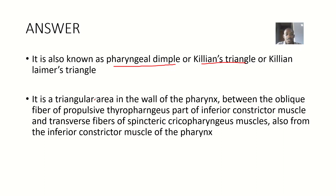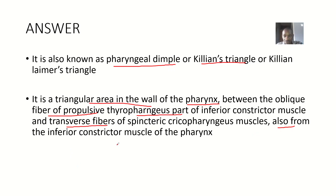It is a triangular area in the wall of the pharynx, between the oblique fibers of the thyropharyngeus part of the inferior constrictor muscle and the transverse fibers of the sphincteric cricopharyngeus muscle, which are also part of the inferior constrictor muscle of the pharynx.